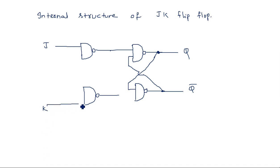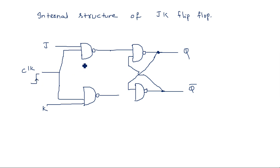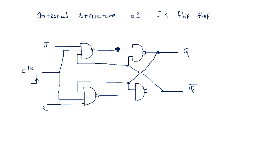This is the clock input, connected commonly to both NAND gates — a rising edge clock input. The first gate has a feedback connection from the Q-bar output, and the second gate has a connection from the Q output. So Q-bar is the input for the first gate and Q is the input for the second gate. This is the internal architecture of the JK flip-flop.